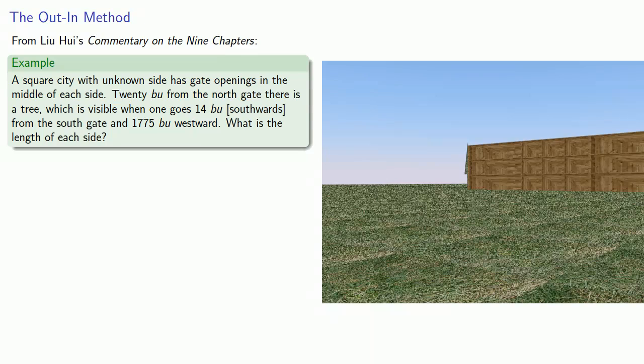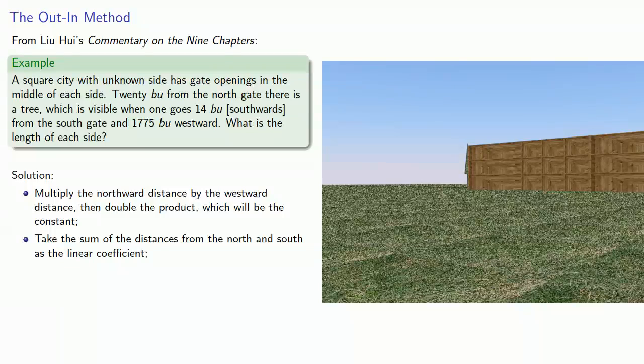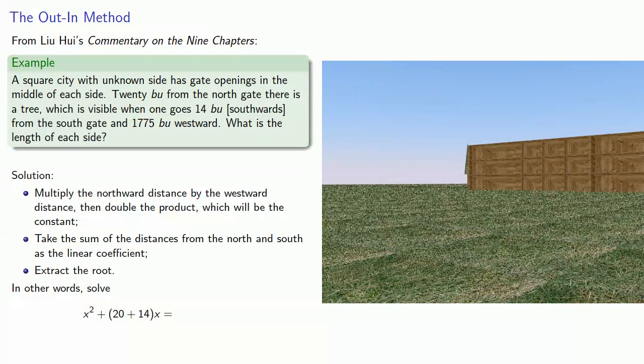Now to solve this, Liu Hui gives the following instructions. Multiply the northward distance by the westward distance, then double the product, which will be the constant. Take the sum of the distances from the north and south gates as the linear coefficient, and then extract the root. Remember that this phrase, extract the root, really means to solve a quadratic equation. And so Liu Hui's solution is essentially to solve the quadratic equation where our linear coefficient is the sum of the north and south distances, and our constant is twice the northward distance times the westward distance.